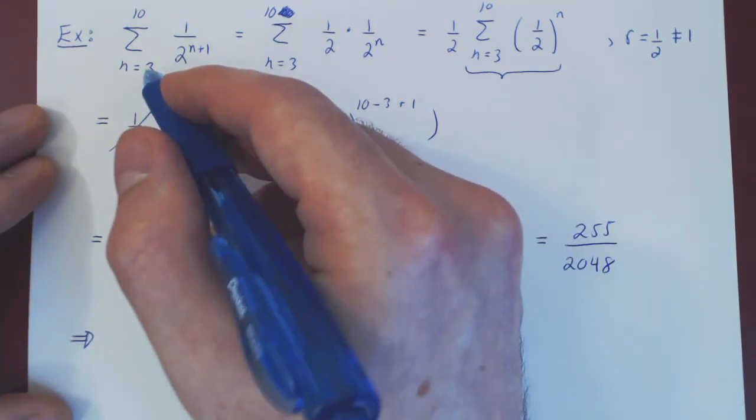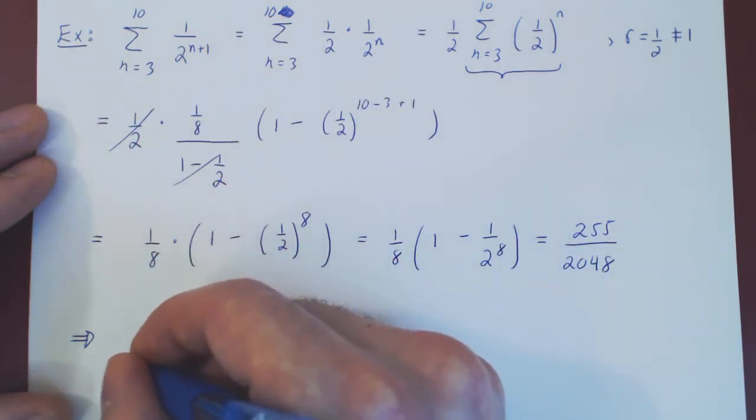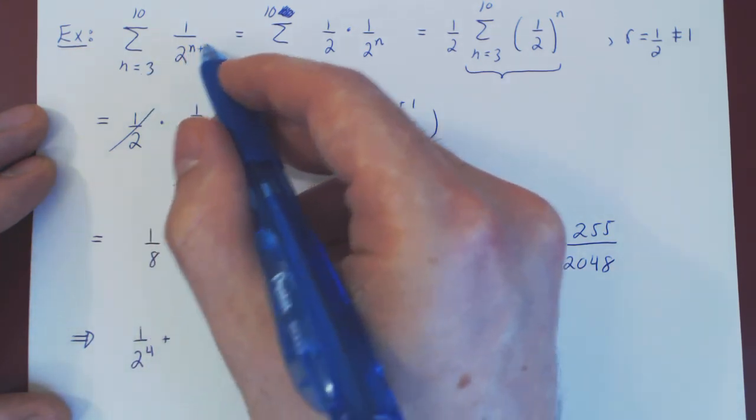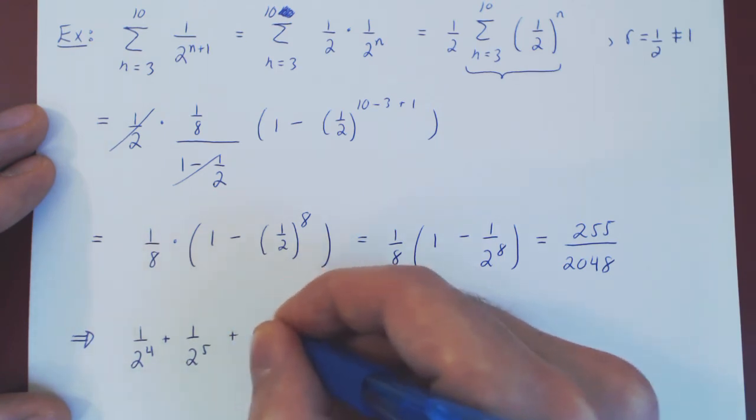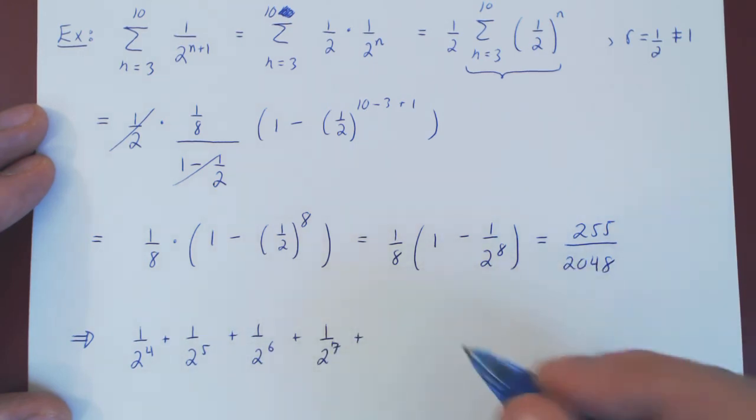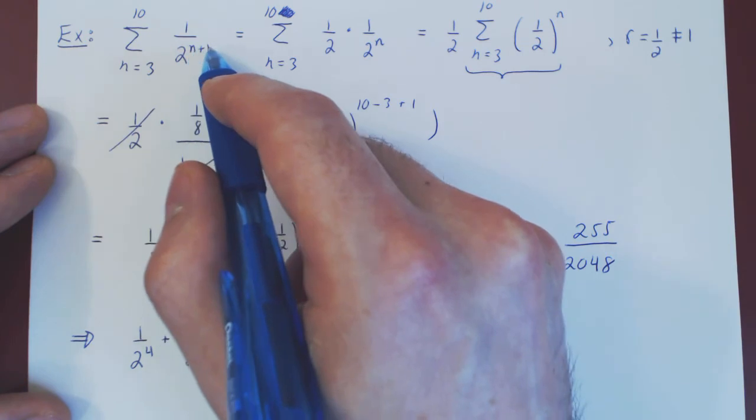So when n is 3, you get 3 plus 1 is 4, so it's 1 over 2 to the 4, plus when n is 4, 4 plus 1 is 5, so 1 over 2 to the 5, plus 1 over 2 to the 6, and so forth. And we're going to go all the way up to when n is 10, 10 plus 1 is 11.